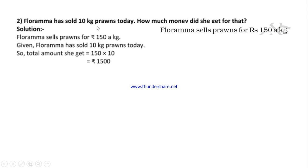Are we going to find more or less? Are we going to find the value of 1 or more? We are going to find 10 kg of prawns — that is more. So we have to multiply here. Florama sells prawns: 1 kg costs Rs. 150, and she sold 10 kg of prawns today. So how much money did she earn? We are going to find it by multiplying.